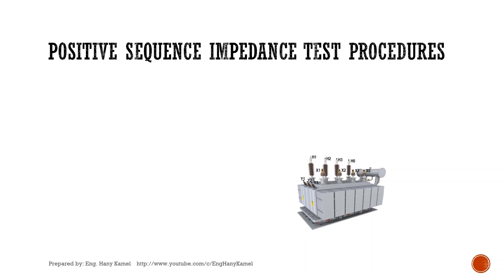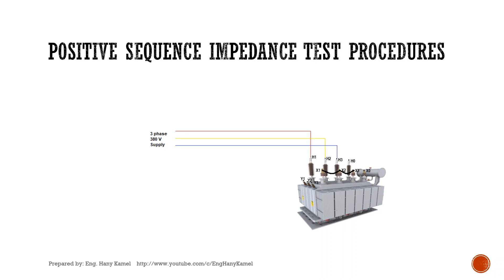This test is important to check if there is any deformation in the windings or connections. If we consider a power transformer with three voltage levels, we will check it between each two voltage level windings. We will start with impedance between the high voltage and low voltage windings. We will short circuit the low voltage winding, and the tertiary winding will be open. Three phase supply will be injected to the high voltage side.